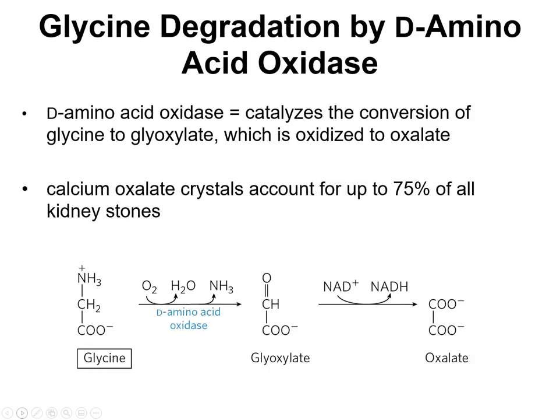D-amino acid oxidase catalyzes conversion of glycine to glyoxalate, which is then oxidized to oxalate. Excess oxalate can account for kidney stone formation — most kidney stones contain some form of calcium oxalate.